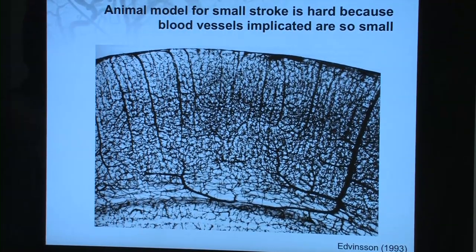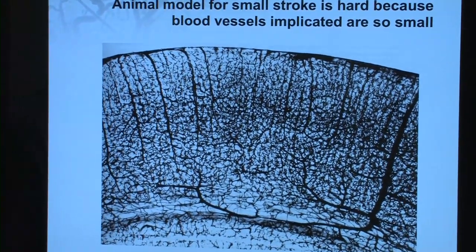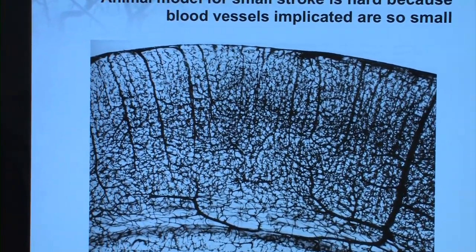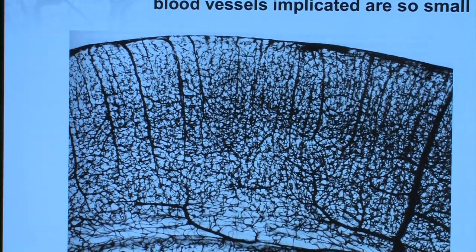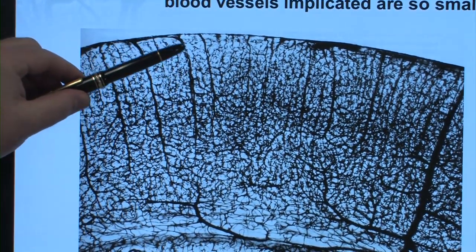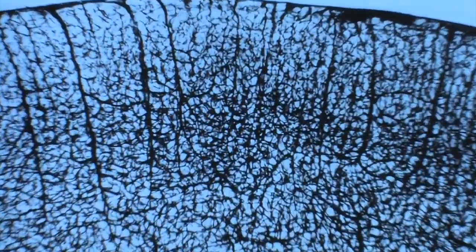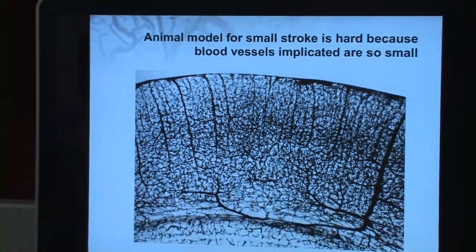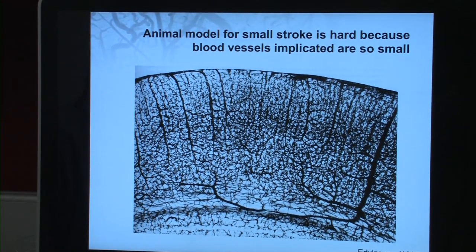But the problem is that the vasculature that's implicated are these tiny little blood vessels in the brain. So this is a cross-section of the brain of a rat where the vessels have been labeled by injecting a black ink. And it's these small little vessels that plunge from the brain surface down into the tissue or even these individual little capillaries down in the brain that are responsible for these small strokes. And so as you can imagine, it's just very difficult to be able to go in and block one of these tiny blood vessels or cause one of them to hemorrhage. The vessels are just too small to manually manipulate.